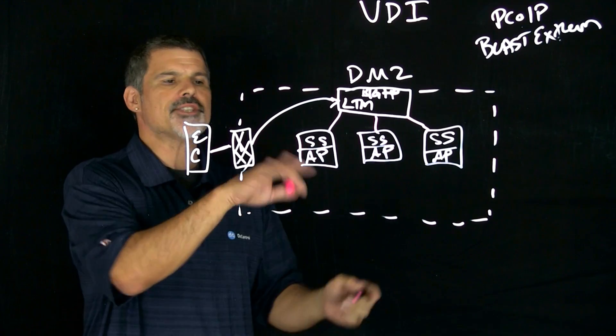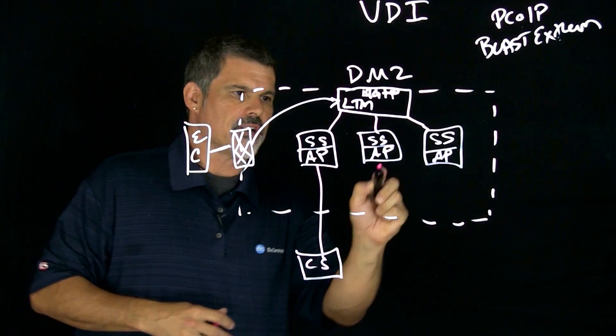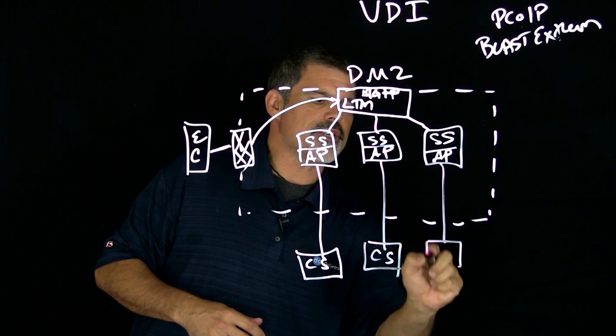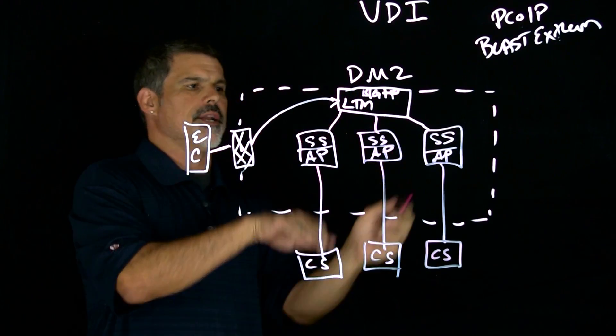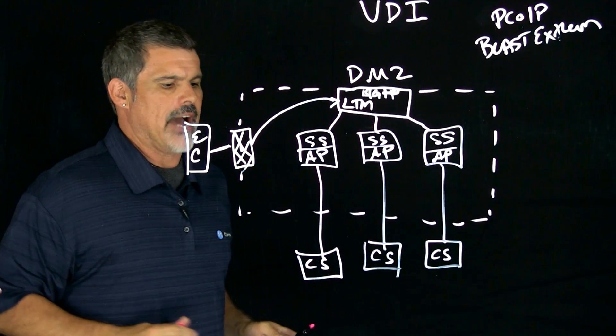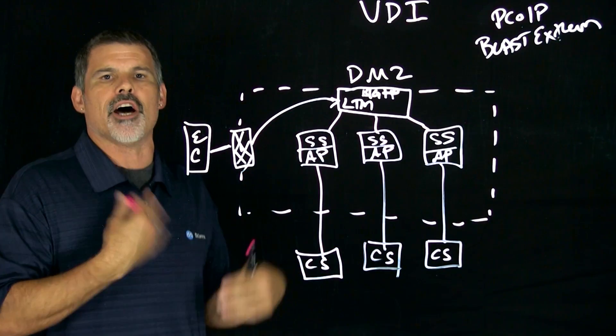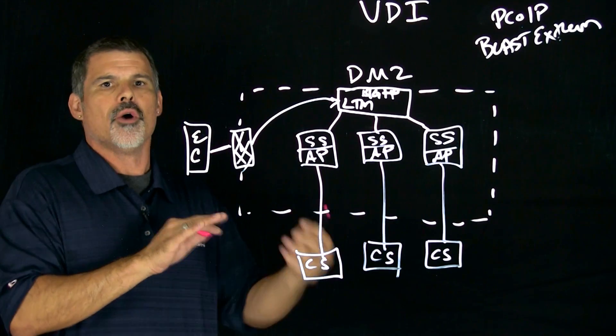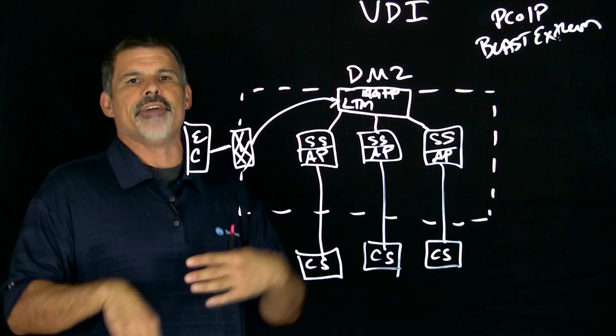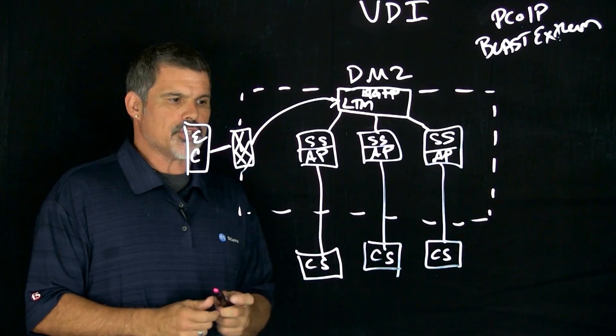From the security servers, these go to what's called the connection servers. Now the connection servers, there's a one-to-one matching for security servers and connection servers. So however many I have here, you have to have down here. The security servers then send things like the authentication information and the connection servers will then talk to AD, verify the user, and they'll also divvy up and send out the DNS and DHCP and those sorts of things.